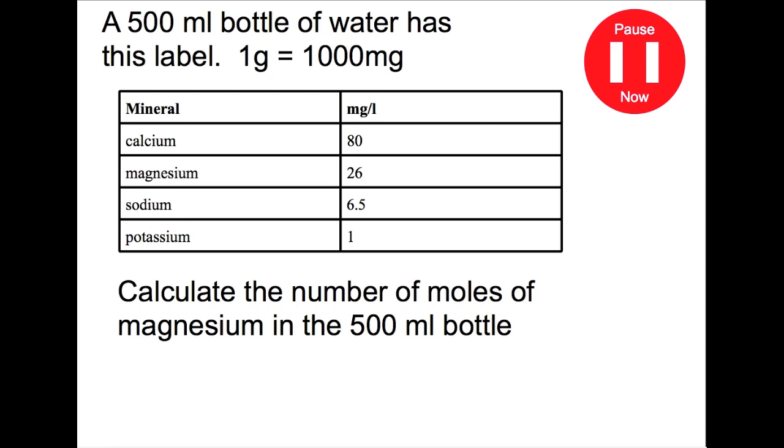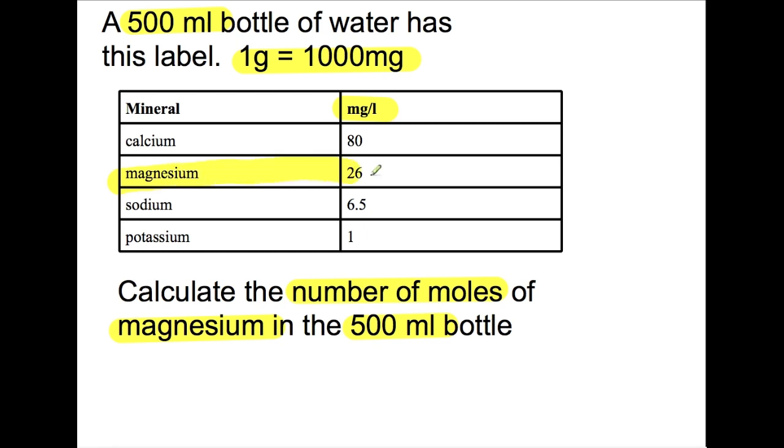Pause the video now and try and answer this question about a bottle of water. So in this question we are given some information about a bottle of water. We know that it is a 500ml bottle. We are told that 1 gram is equal to 1000 milligrams. And within the label you are told how many milligrams per litre you have. We are trying to calculate the number of moles of magnesium in the 500ml bottle. So we are looking at this line of the table.